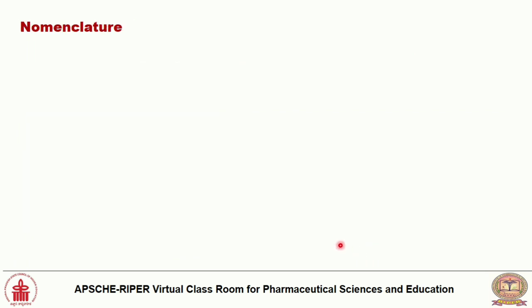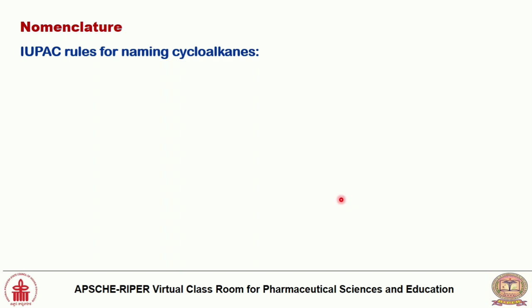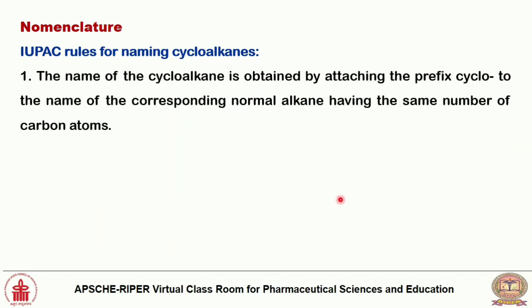Next, the nomenclature of cycloalkanes — how we give naming for cycloalkanes. There are trivial names and IUPAC names. The IUPAC rule: the name of a cycloalkane is obtained by attaching the prefix 'cyclo' to the name of the corresponding normal alkane having the same number of carbon atoms.